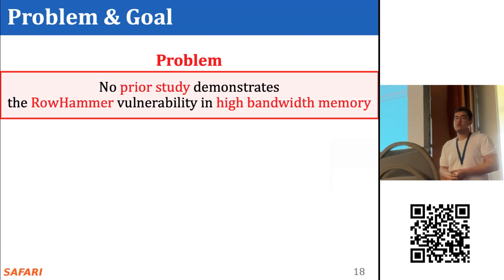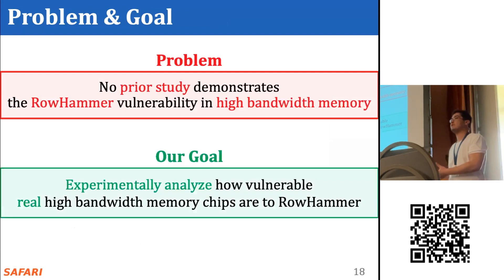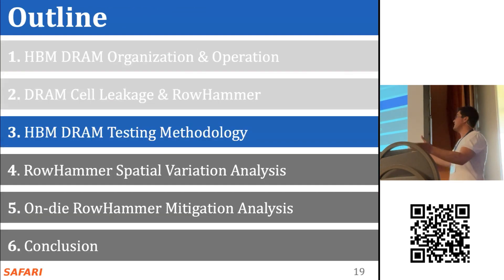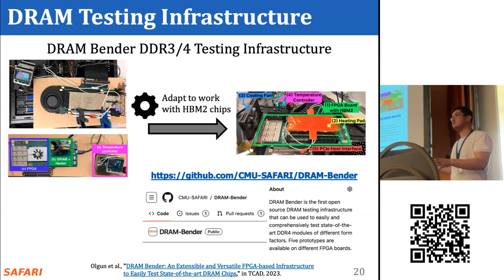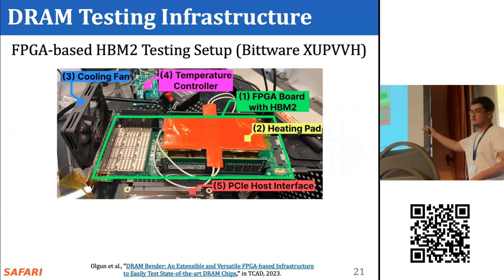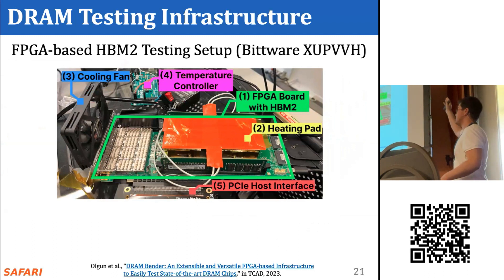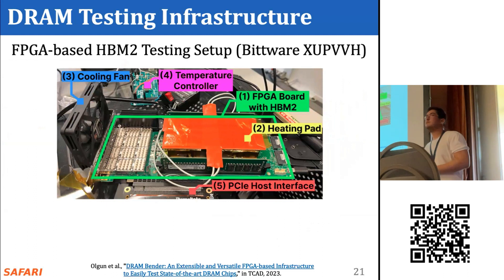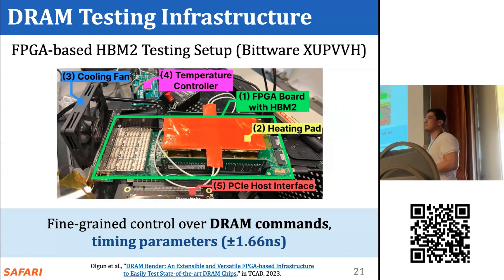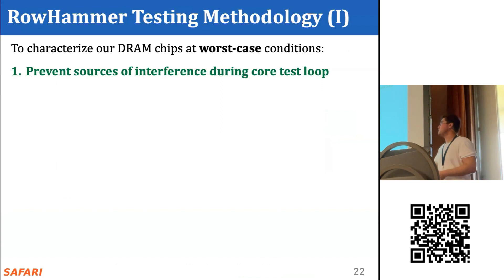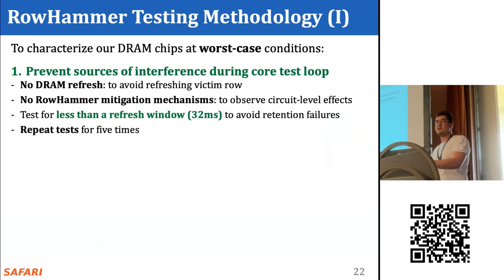No prior work has rigorously studied the RowHammer vulnerability in high-bandwidth memory chips. Our goal is to experimentally analyze how vulnerable these chips are to RowHammer. Our infrastructure is based on the DRAM Bender DDR4 testing infrastructure, which we adapted to work with HBM2 chips. We use the Bittware AQP-VVH HBM2 FPGA board. We control the heating pad and cooling fan with an Arduino temperature controller to keep the temperature stable. This setup gives us fine-grained control over DRAM commands, with as low as 1.66 nanosecond delay between consecutive DRAM commands.